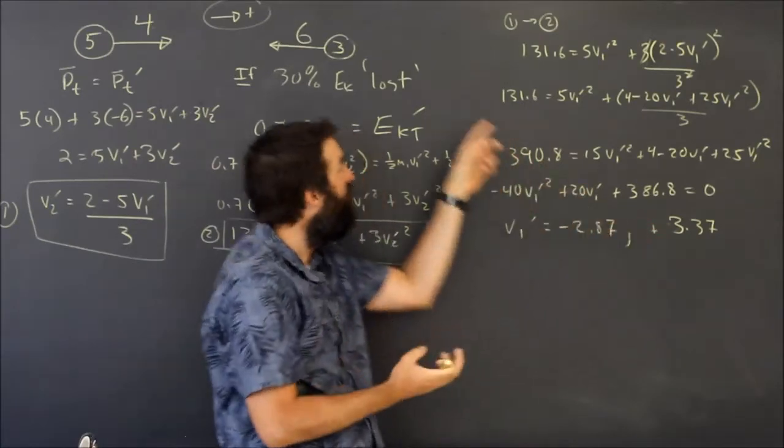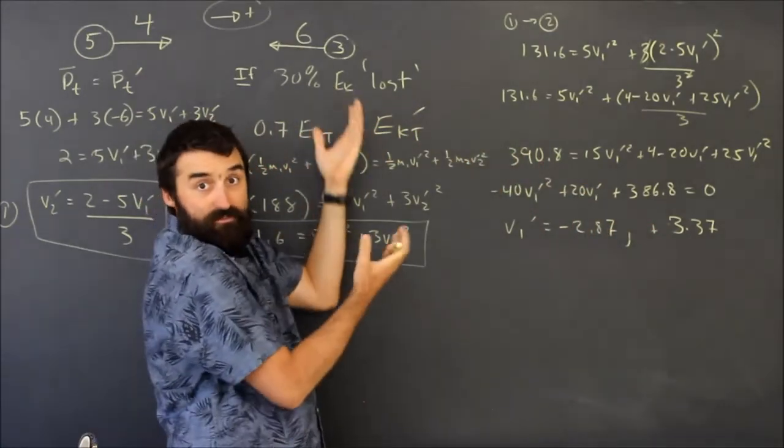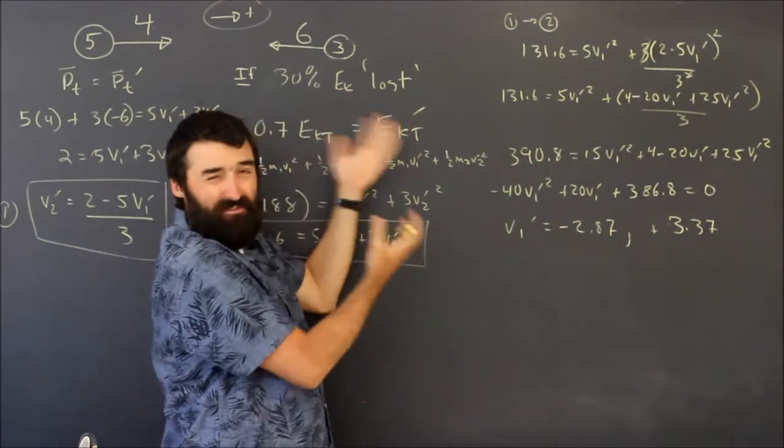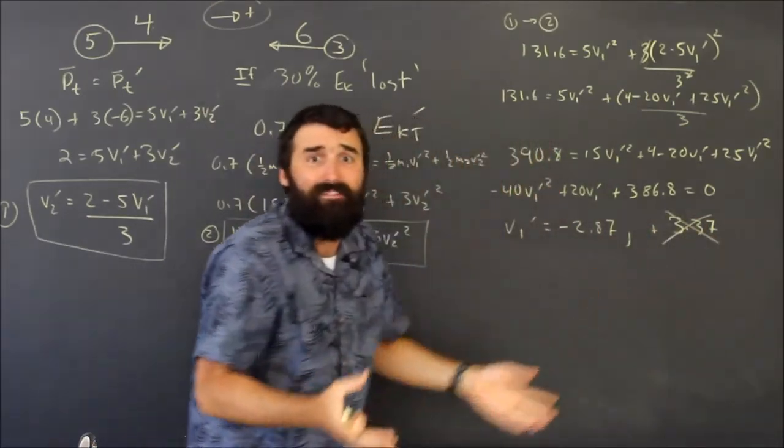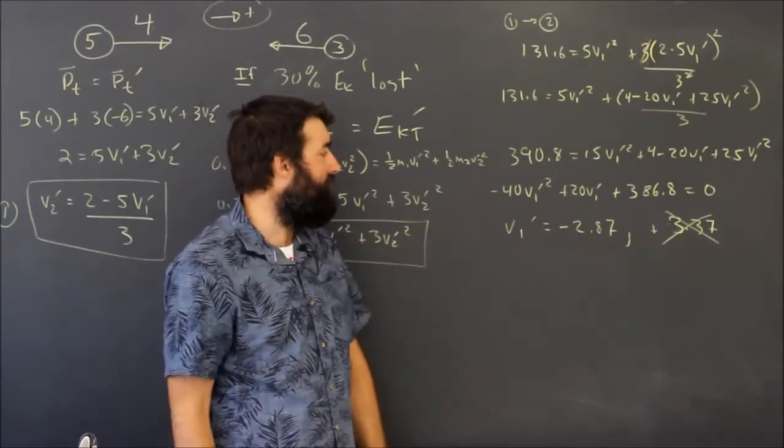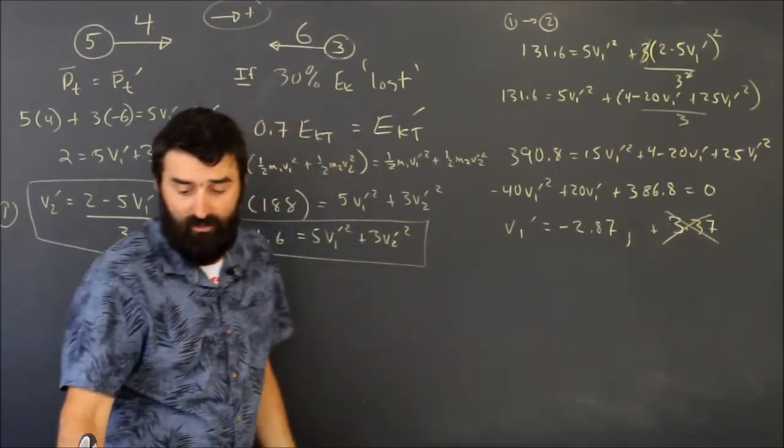And this one is to the right but smaller than the original. Again, it makes sense if they somehow missed each other but also slowed down because they lost 30% of their kinetic energy. So the math is right, this is a possibility, it satisfies the equations, but it's junk. It means they didn't touch, they missed each other.